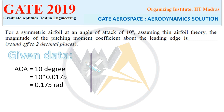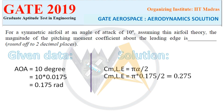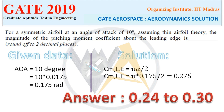Given data: angle of attack is 10 degrees, converting to radians by multiplying by 0.0175 gives approximately 0.175 radians. The formula for pitching moment coefficient about the leading edge is cm = −πα/2. Since magnitude is asked, we ignore the minus sign. Substituting: cm = π × 0.175 / 2 ≈ 0.275. Rounded to two decimal places the answer is 0.28, within the acceptable range of 0.24 to 0.30.